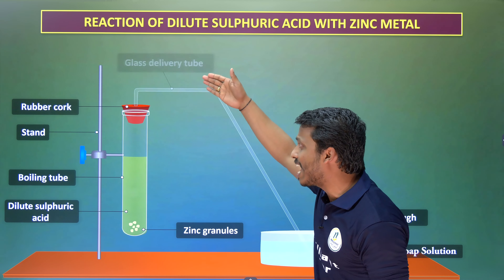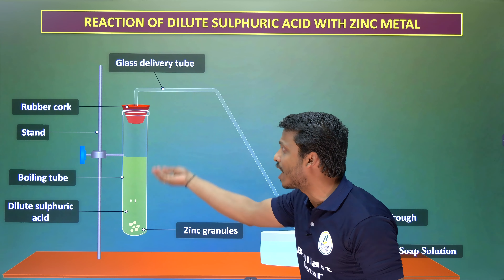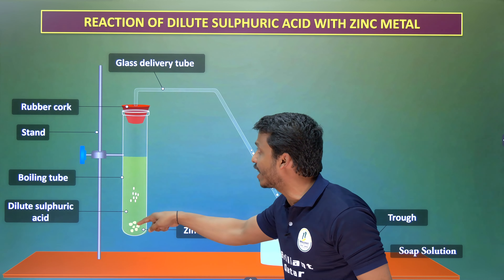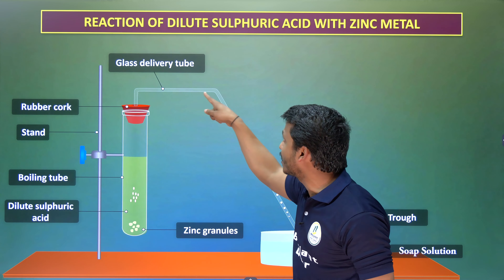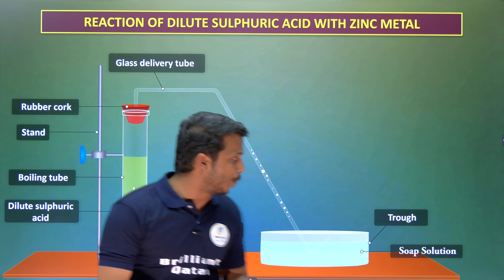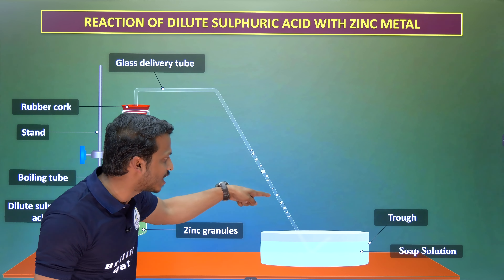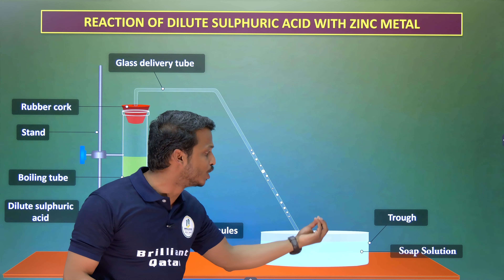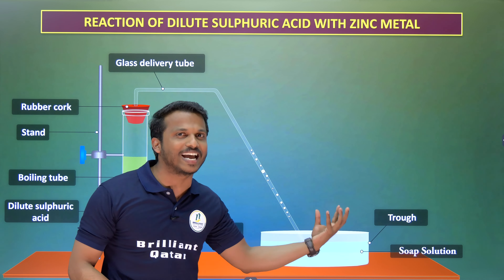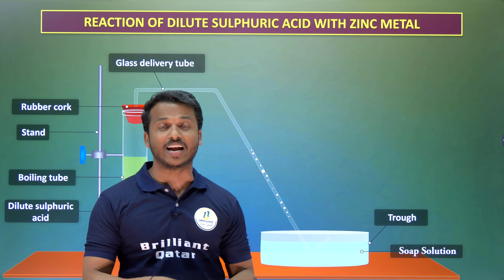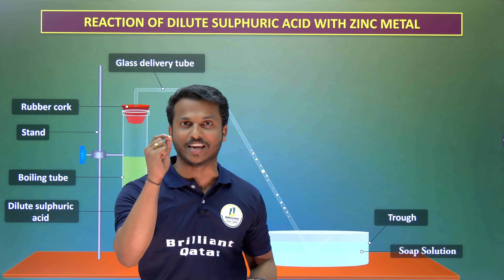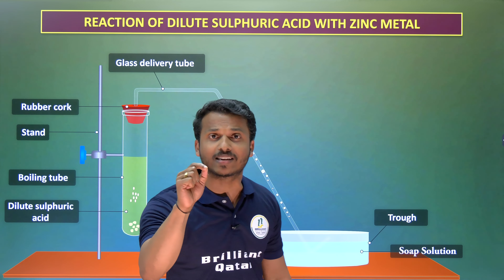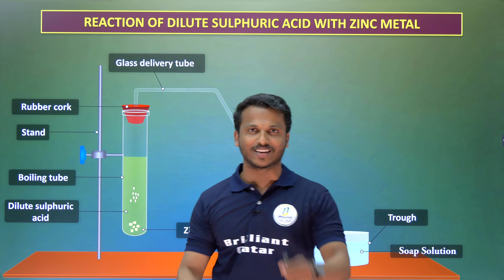You can see that some gases have started to generate. These gases are passing through the delivery tube. The hydrogen gas enters the soap solution, and some bubbles get generated. What gas do these bubbles contain? That is my question.